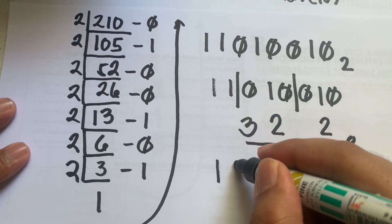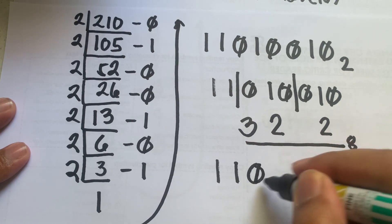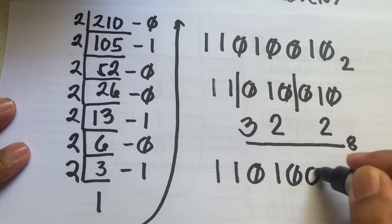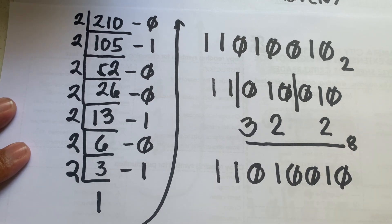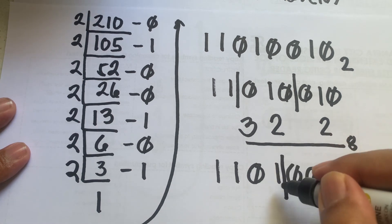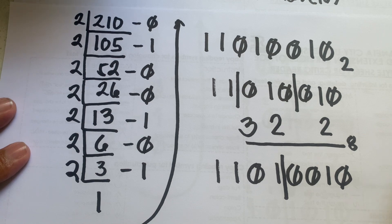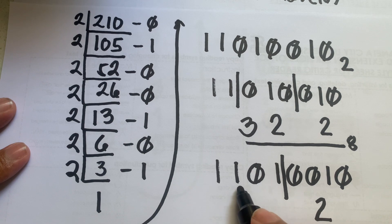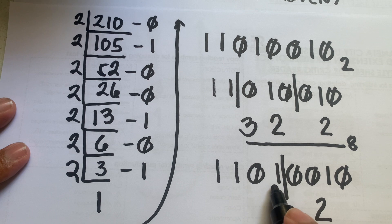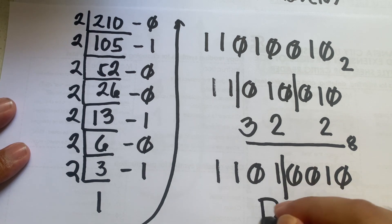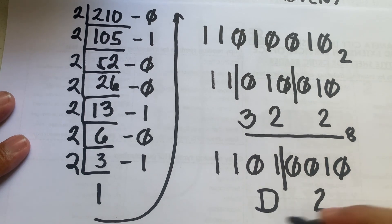To convert to hexadecimal, we rewrite the binary number and group into sets of 4 from the right. Using positional values 1, 2, 4, 8: the first group gives 4 plus 8 plus 1 equals 13, which is D in hexadecimal. The second group gives 2. So the hexadecimal equivalent of 210 is D2.